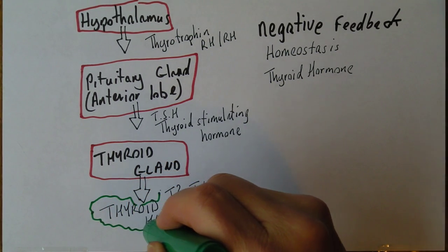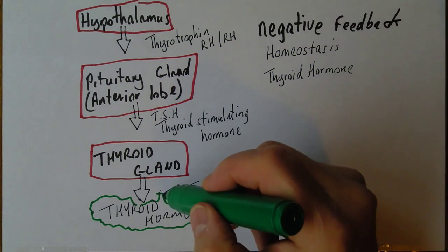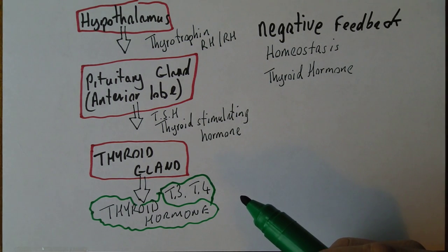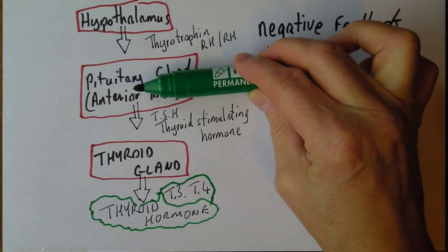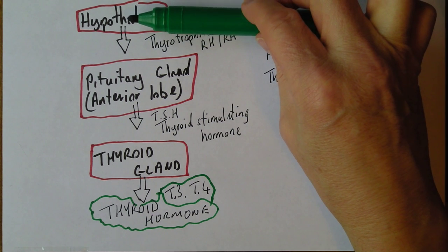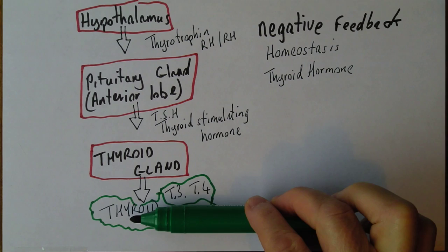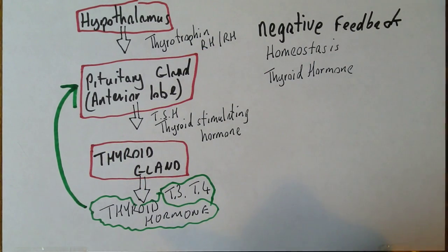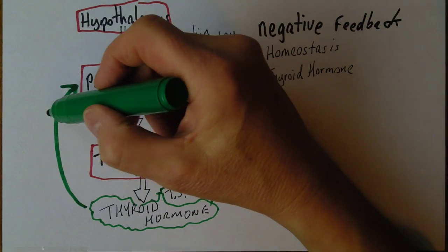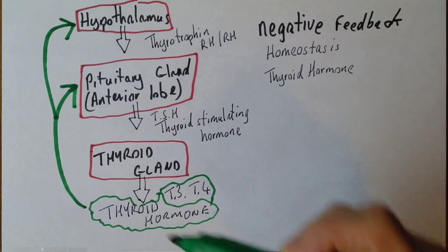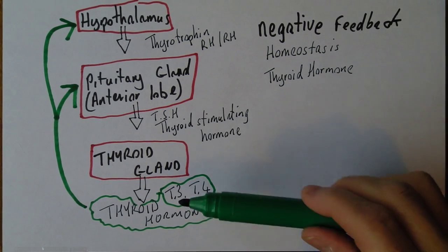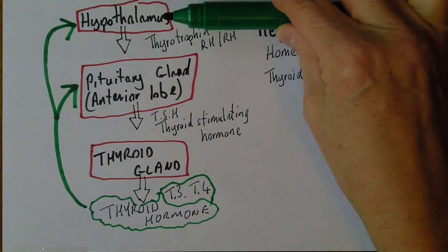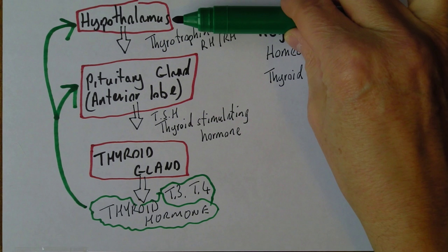So now we've got what we wanted — more thyroid hormone in the blood. But of course we don't want too much thyroid hormone, we don't want this process to keep going on. The anterior lobe of the pituitary gland and the hypothalamus are both sensitive to the levels of thyroid hormone in the blood. As levels increase, that will be detected by the anterior pituitary and, perhaps more importantly, also by the hypothalamus.